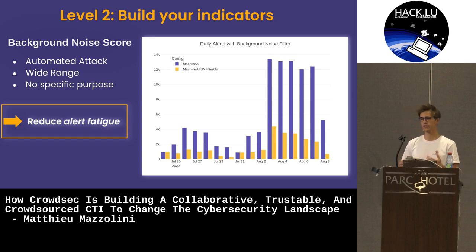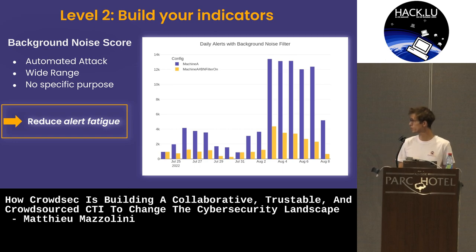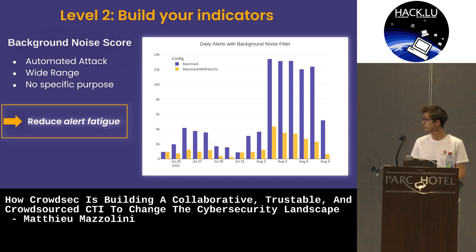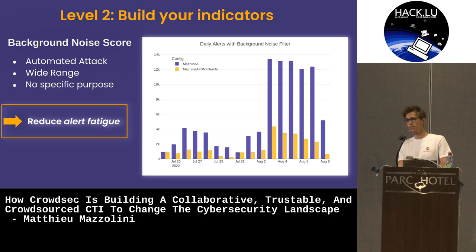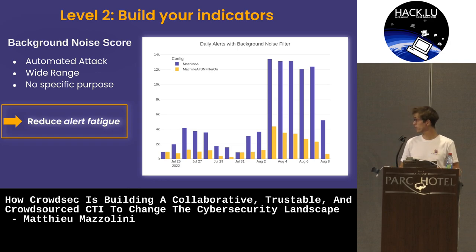At a second level, we build indicators. Based on the enriched and contextualized data, we come up with indicators. This one is the background noise score — a score from 0 to 10 representing whether an attack is made in an automatic way, from a wide range on the internet, and without any specific purpose. The goal is to reduce alert fatigue for the SOC team. As you can see on the chart, if you don't have the background noise filter you have the purple bars; if you apply it, you decrease your amount of IOCs significantly, shown by the yellow bars.